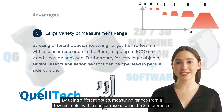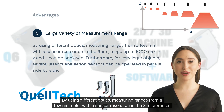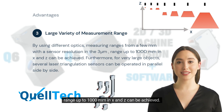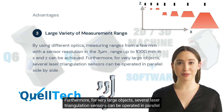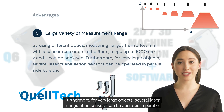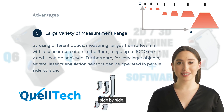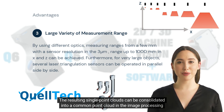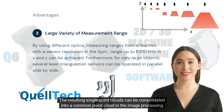By using different optics, measuring ranges from a few millimeters with a sensor resolution in the 3 micrometer range, up to 1000 millimeters in X and Z, can be achieved. Furthermore, for very large objects, several laser triangulation sensors can be operated in parallel side by side. The resulting single point clouds can be consolidated into a common point cloud in the image processing software.